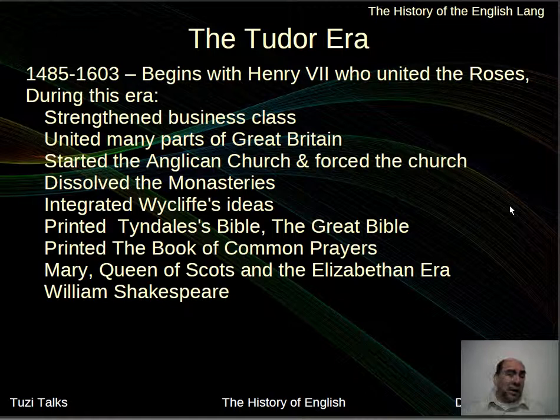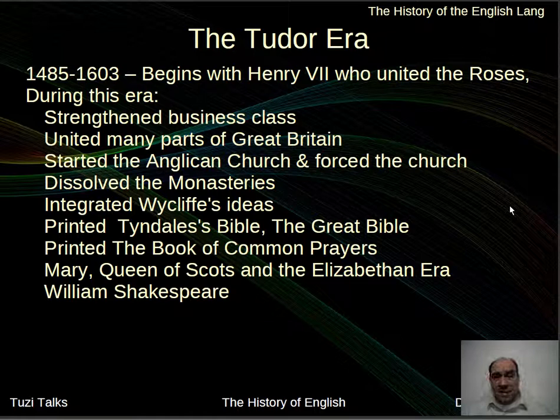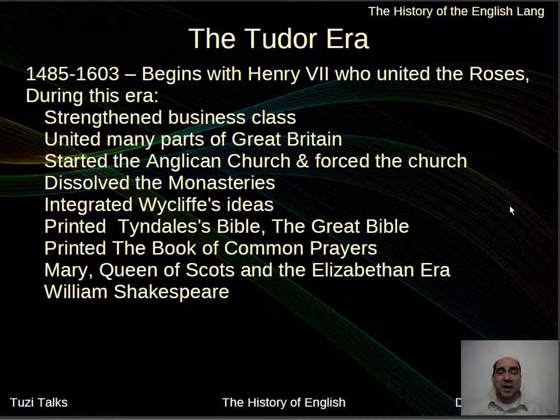The Tudor era is a block of time when the Tudor dynasty ruled England — at least parts of the island. Eventually, with the joining of the crowns, we'll have the end of the Tudor era. From 1485 to 1603, we begin with Henry VII, who unites the warring factions of the War of the Roses and begins the reign of the Tudors.